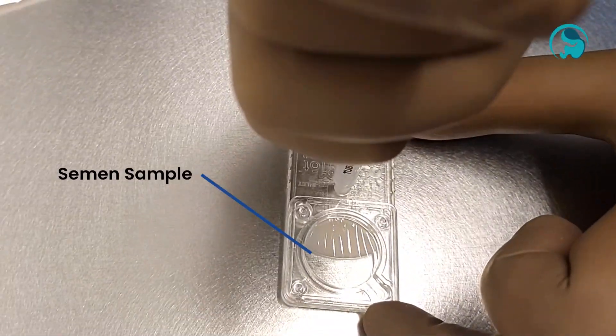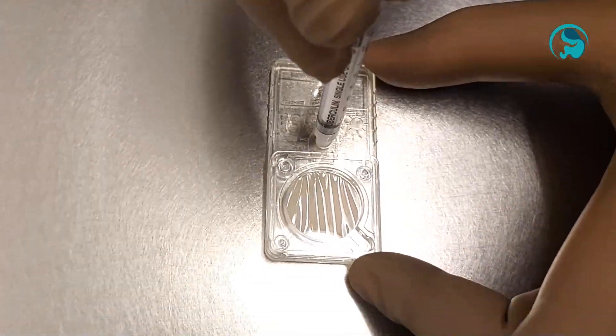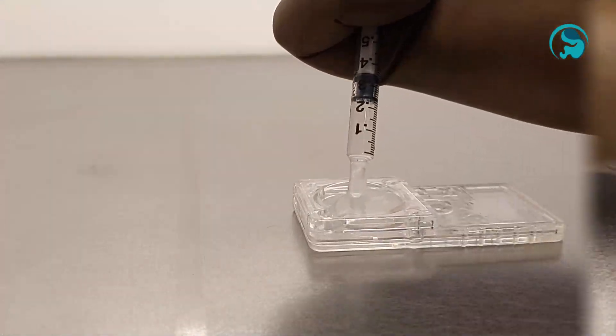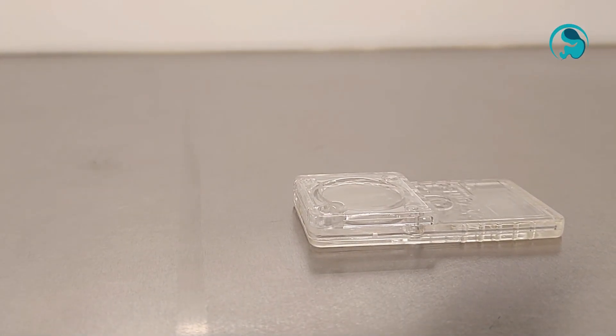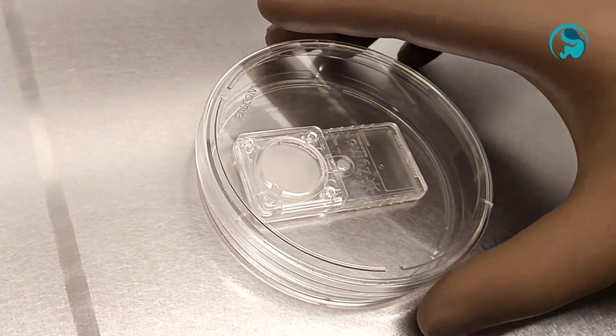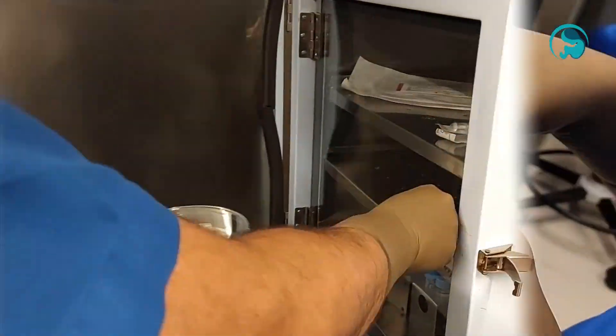The semen sample after liquefaction is slowly injected into the device. Appropriate amount of media is added to the top of the membrane and the device is then kept in an incubator for about 30 minutes.